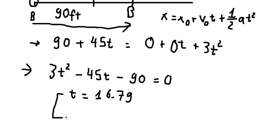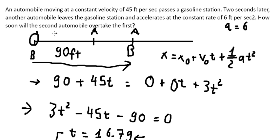And the second one is about negative 1.79. So we need to select the positive number because this is about the time in seconds.